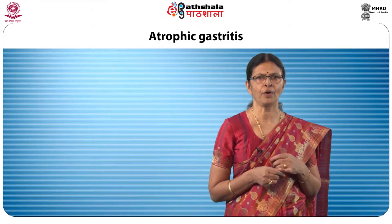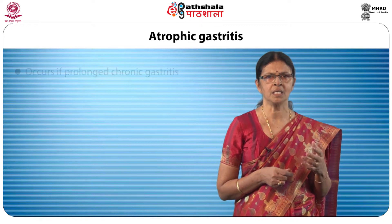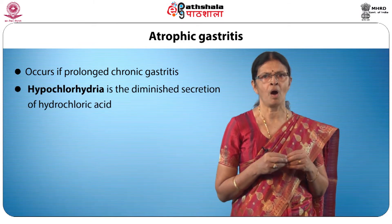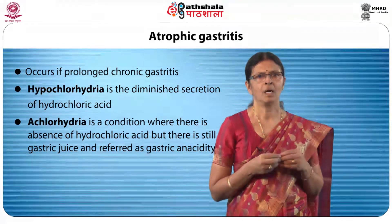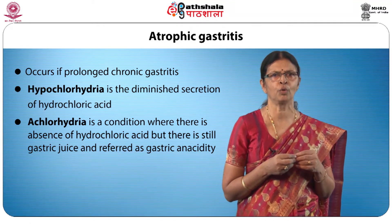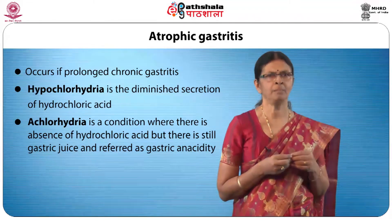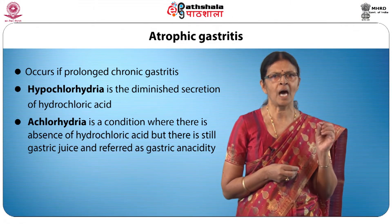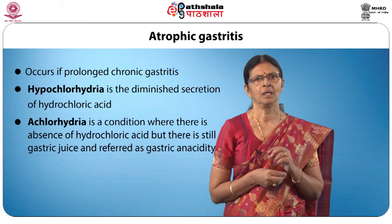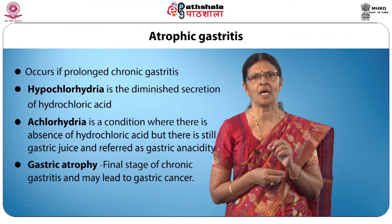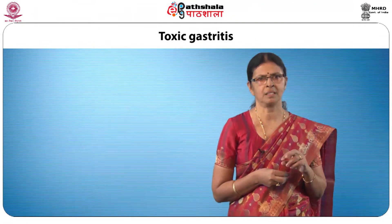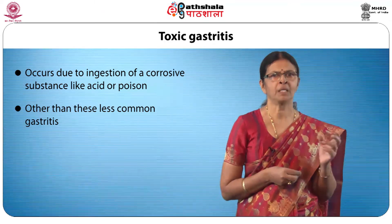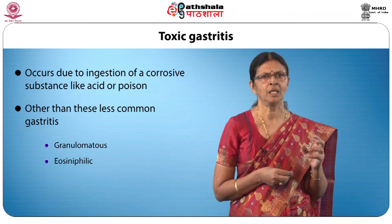Now we shall move on to atrophic gastritis, which occurs as a result of prolonged chronic gastritis. Hypochlorhydric gastritis — the diminished secretion of hydrochloric acid in the stomach — is common. Achlorhydric gastritis is a condition where there is absence of hydrochloric acid but there is still gastric juice, referred to as gastric anacidity. Gastric atrophy is the end stage and may lead to gastric cancer. Toxic gastritis occurs due to ingestion of a corrosive substance like acid or poison. Other less common types include granulomatous, eosinophilic, and lymphocytic gastritis.